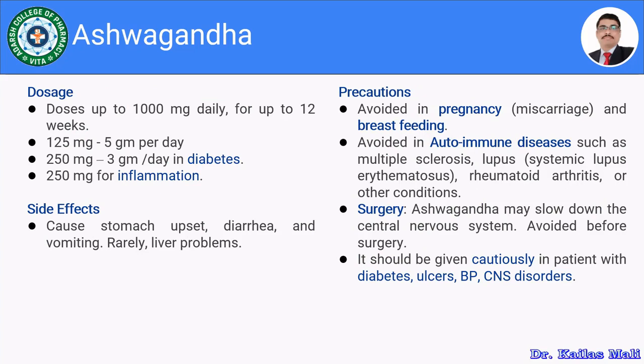Moving towards the side effects of Ashwagandha. It mainly causes stomach upset, diarrhea, and vomiting, and rarely liver problems.